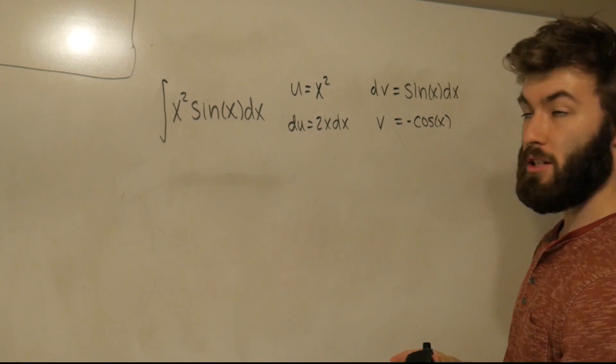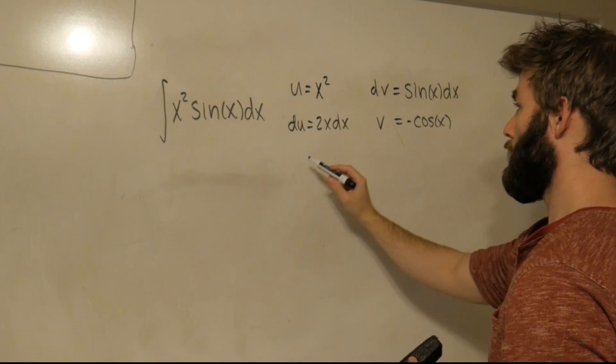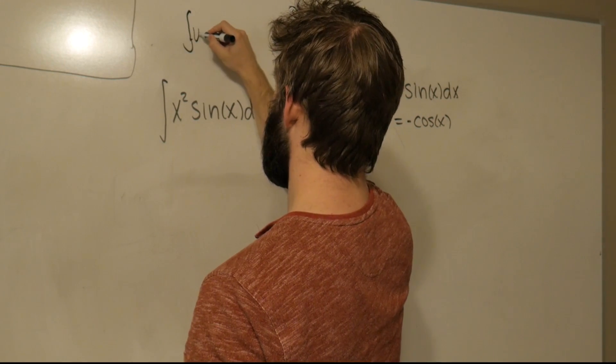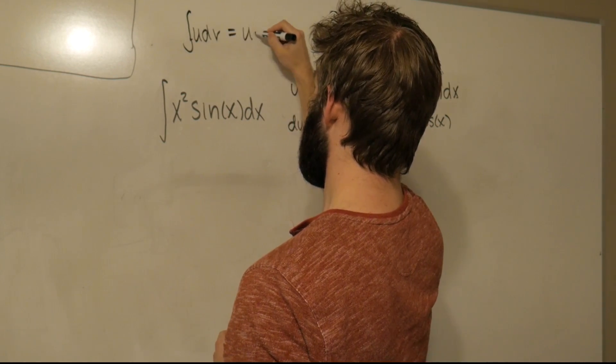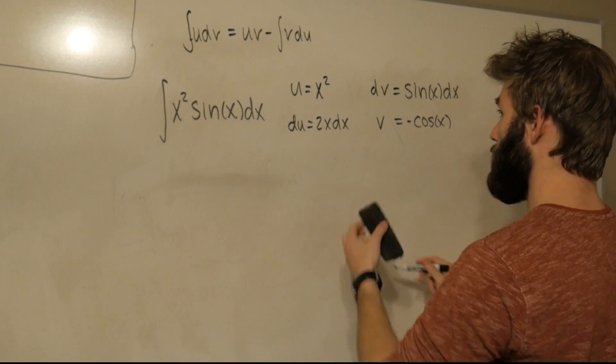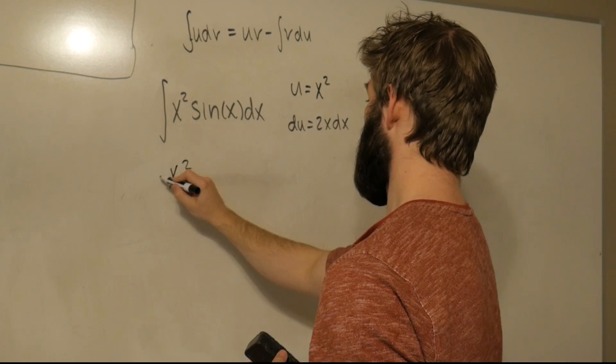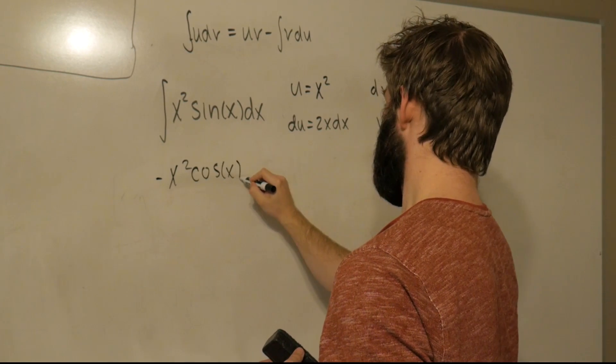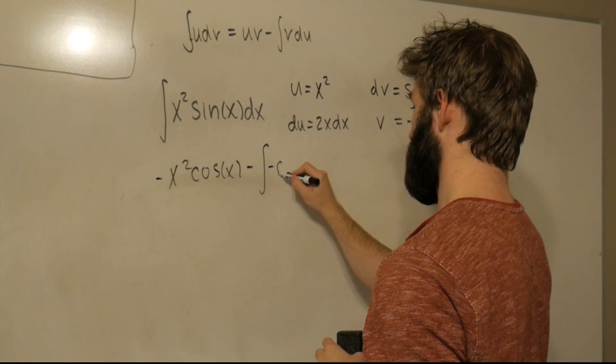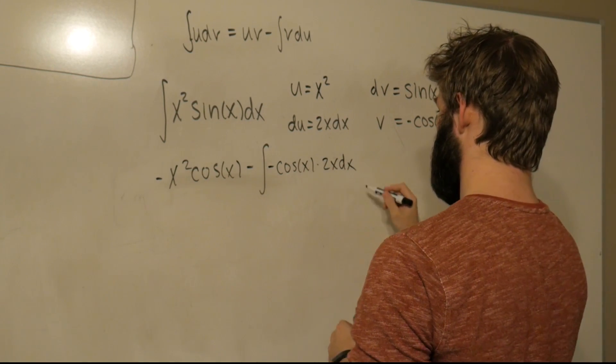Now we can use the actual integration by parts formula. So it's just going to be uv - ∫v du. So that's going to be... let me write integration by parts up here real quick. Okay, so if we just pattern match here, what we get is that this is equal to -x² cos(x) - ∫v du. So -cos(x) times 2x dx.